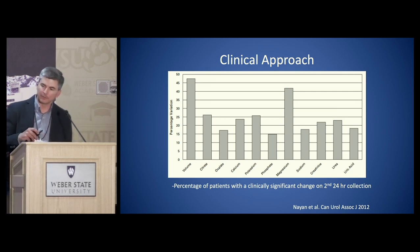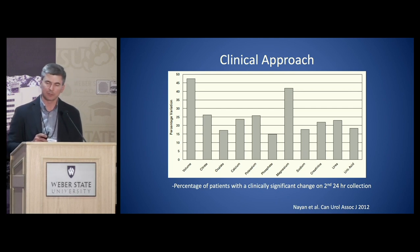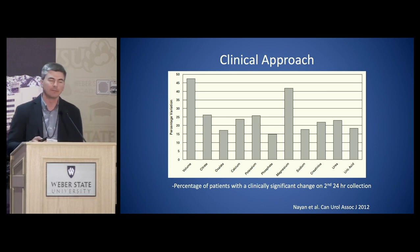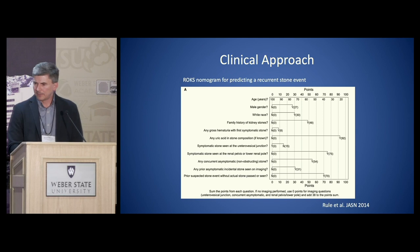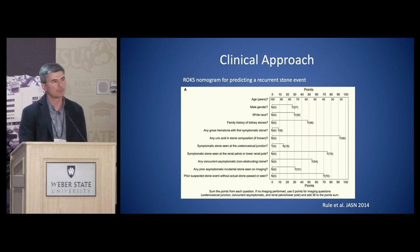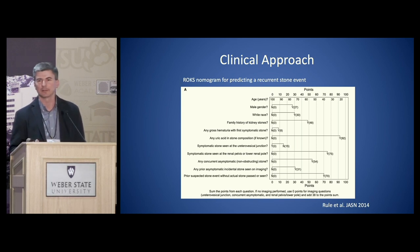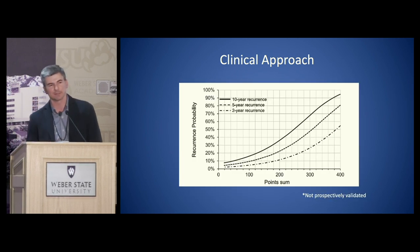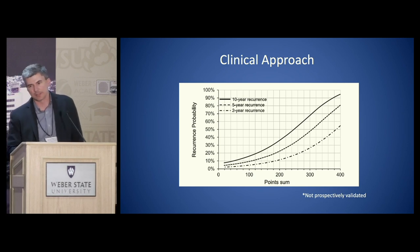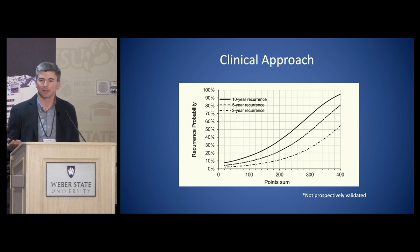This data shows patients who had two back-to-back 24-hour urines, demonstrating large variability in the content between collections. So it's always helpful to have a couple of them to understand what's happening with the patient. Also for your knowledge, the ROX nomogram is an online calculator — if you go through the questions, it gives you a predicted risk of recurrence, including 2-, 5-, and 10-year recurrence rates. However, it has not been prospectively validated yet, so it may be a helpful tool with more time and data.